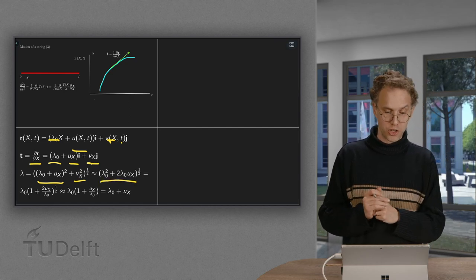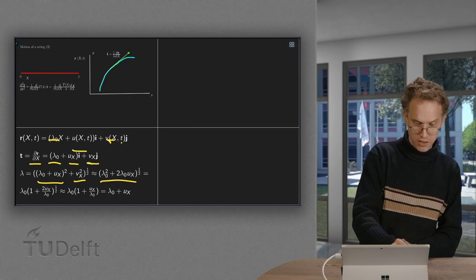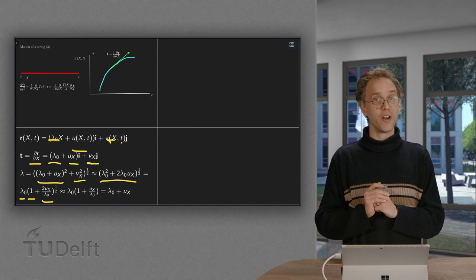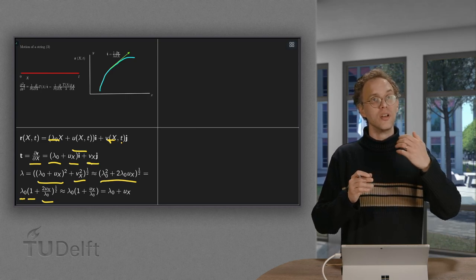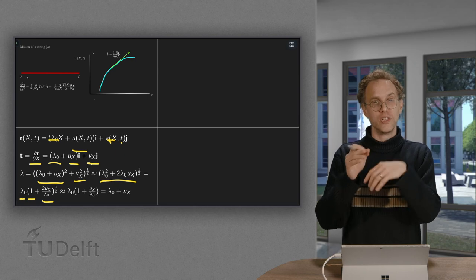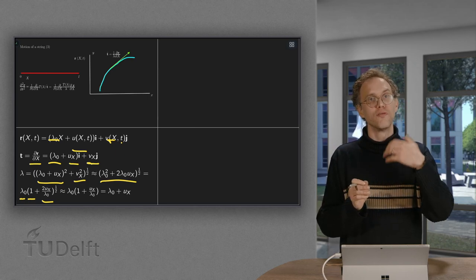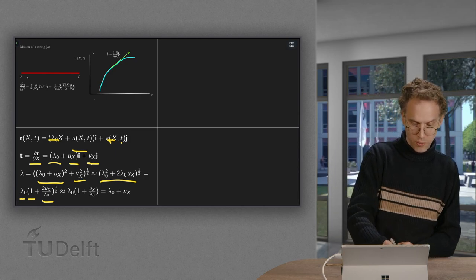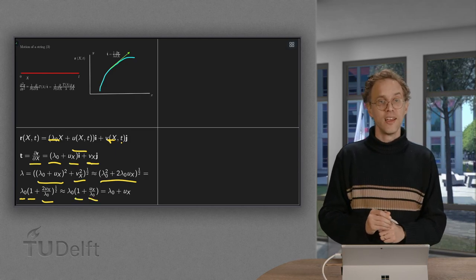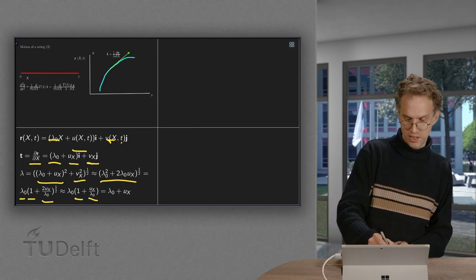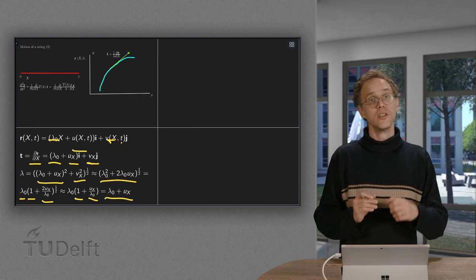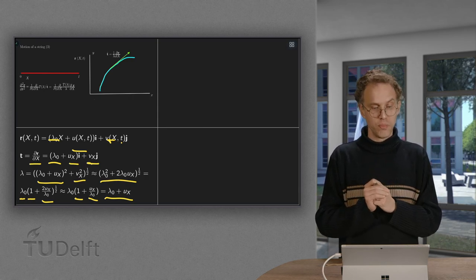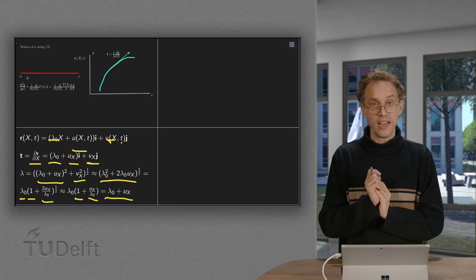And then we can take out lambda 0 squared. So we get lambda 0 over here, a 1 here, and a 2 ux over lambda 0 over there. And then we use the square root of 1 plus something small. We Taylor it basically. The square root of 1 plus something small equals 1 plus 1 half the small thing. And then work out the brackets. We get the lambda 0 plus ux. So the lambda up to linear order is now given by lambda 0 plus ux. So much easier expression than the general one.